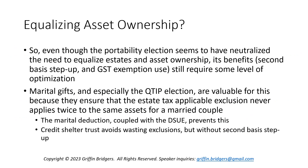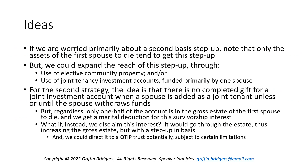The credit shelter trust and AB plan also avoid wasting exclusions, but the trade-off is the loss of that second basis step-up. If we're worried about both the first and second basis step-up and how broad those can be, especially when we might not have equalized ownership, typically only the assets of the first spouse to die will get at least the first step-up. However, we could potentially expand the reach of that step-up. One way is through community property, because with community property it's deemed 50-50 ownership between both spouses. Not only does the 50% of the deceased spouse get a step-up in basis, but also the 50% deemed owned by the surviving spouse gets a step-up in basis — a good way to extend the reach and get that double basis step-up without a corresponding wasting of exclusion on the surviving spouse's interest at first death.